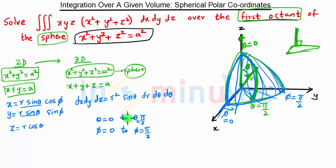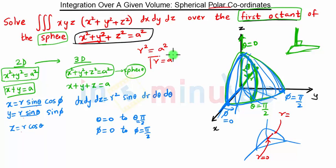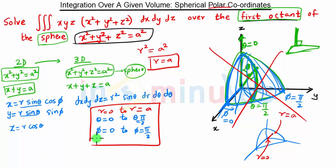Next, we find the limits of r. We consider a ray starting from the origin going to the surface of the first octant of the sphere. The lower end is r = 0. For the upper end, the equation of the sphere in polar coordinates: substituting x = r sinθ cosφ, y = r sinθ sinφ, z = r cosθ into x² + y² + z² = a² gives r² = a², so r = a. Therefore r goes from 0 to a.